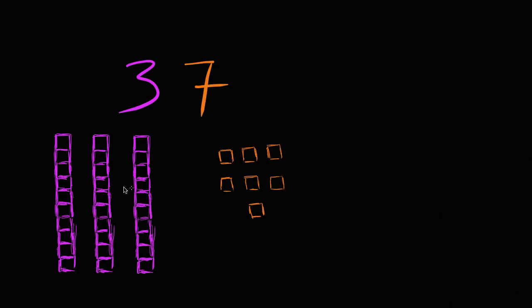So this right over here is one way to represent the number 37. The number 37 has a 3 right over here in the tens place. And so this 3 literally represents 3 tens.